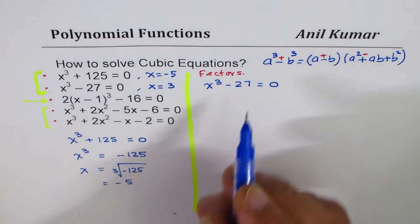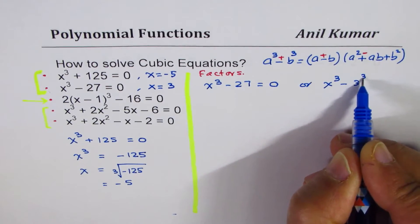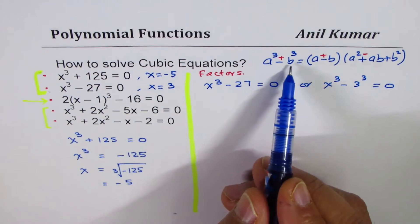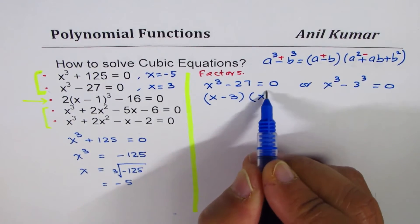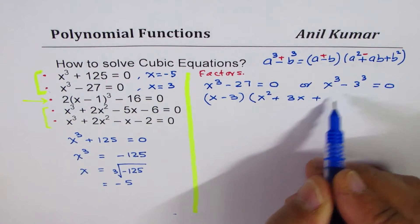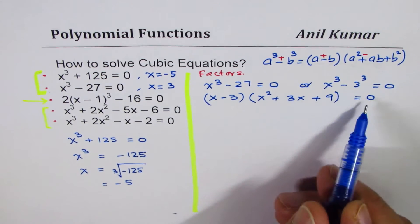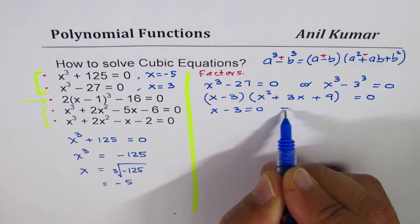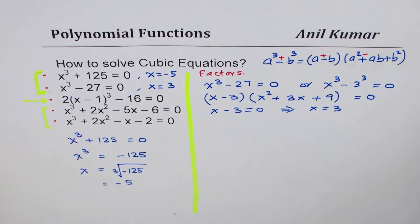We can write x³ - 27 as x³ - 3³, which is in the form a³ - b³. So we factor it as (x - 3)(x² + 3x + 9) = 0. The quadratic factor x² + 3x + 9 is never zero, but x - 3 = 0 gives x = 3.